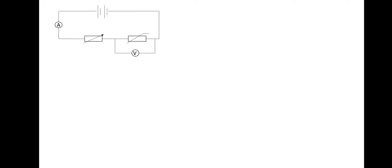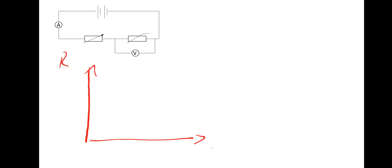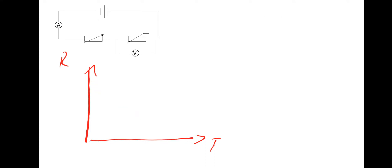The first question is to sketch a graph of resistance against temperature for a thermistor. You plot resistance against temperature and you always get a curve that looks like that — you could exaggerate it a little more. Essentially with a thermistor, the higher the temperature, the lower the resistance.